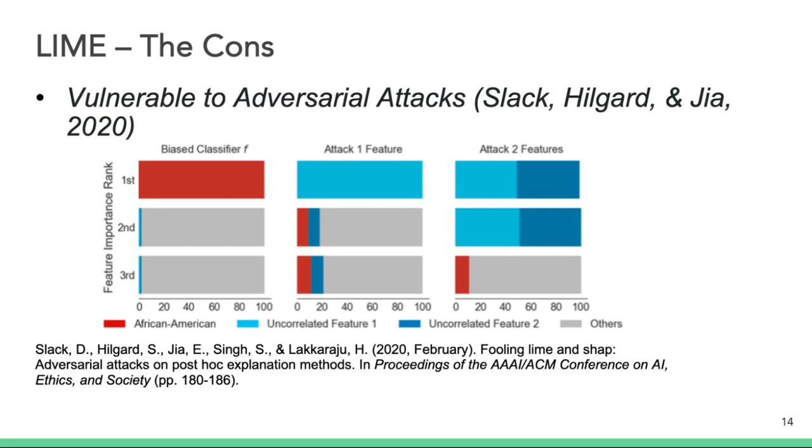The last item on the cons list is that LIME has been shown to be vulnerable to adversarial attacks. In this paper by Dylan Slack and his co-authors, they illustrated a technique for intentionally training a biased classifier that based its decision on racial attributes in a way that was not detected by LIME. The implications here is that LIME can help identify the presence of bias in some cases, but may not be able to detect all biases. And the model can be intentionally designed to be biased without being identified as such by LIME.